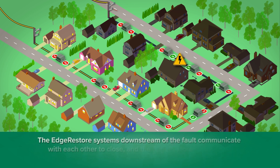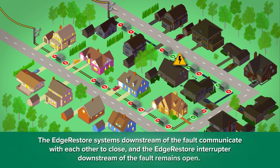The Edge Restore systems downstream of the fault communicate with each other to close, and the Edge Restore interrupter downstream of the fault remains open.